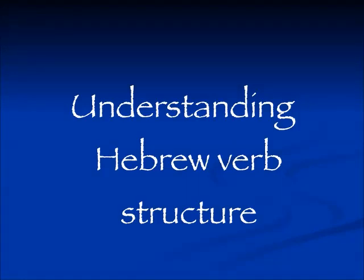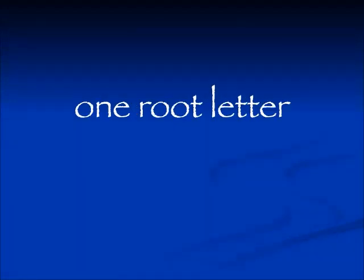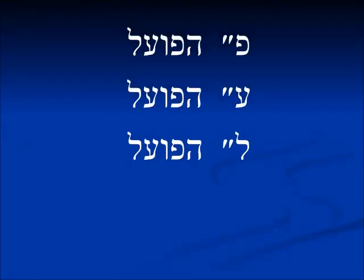Shalom. Today we're continuing to investigate various facets of Hebrew verb structure. There is a peculiar situation where sometimes you will only find one root letter in a conjugation. Previously we have talked about this terminology where the first letter of a root is called Peh hapoal, the middle letter is Ayin hapoal, and the third letter is Lamed hapoal.